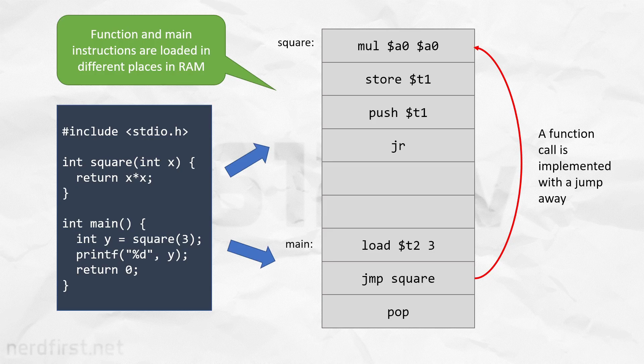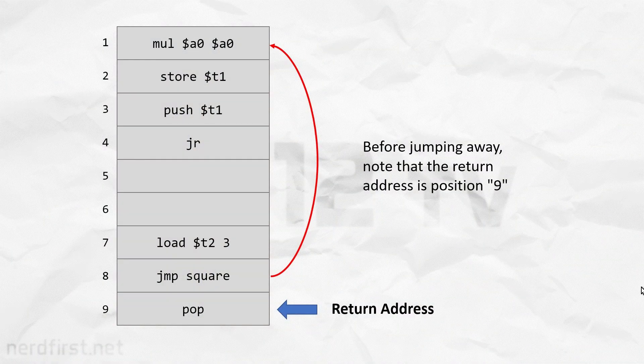So this creates an interesting problem, because after jumping away you've got to know how to jump back. That's not too difficult — all we need to do is store the original position so that when we are off in our function, we can jump back when we're done. But what if that function calls another function? Since there are two returns involved now, we need to remember two return addresses. And that second function could call another function — you get the idea. It stacks up. In fact, the way we solve this problem is to use a stack.